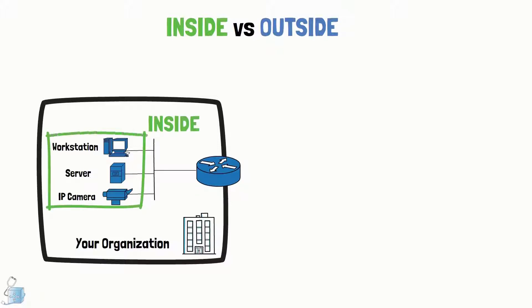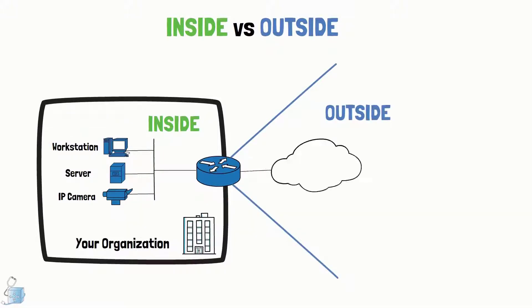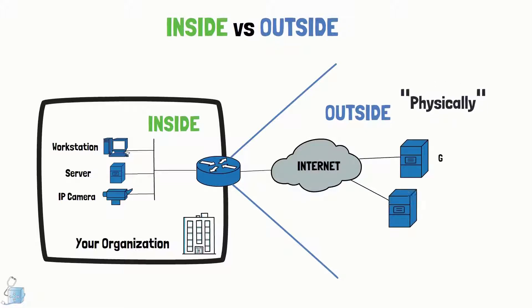The inside term refers to devices residing inside of your organization physically speaking. For example, your organization's workstations and servers that reside behind your NAT boundary router will be considered inside your organization. The term outside refers to devices residing outside of your organization physically speaking — for example, Google or Facebook servers would be considered outside your organization.